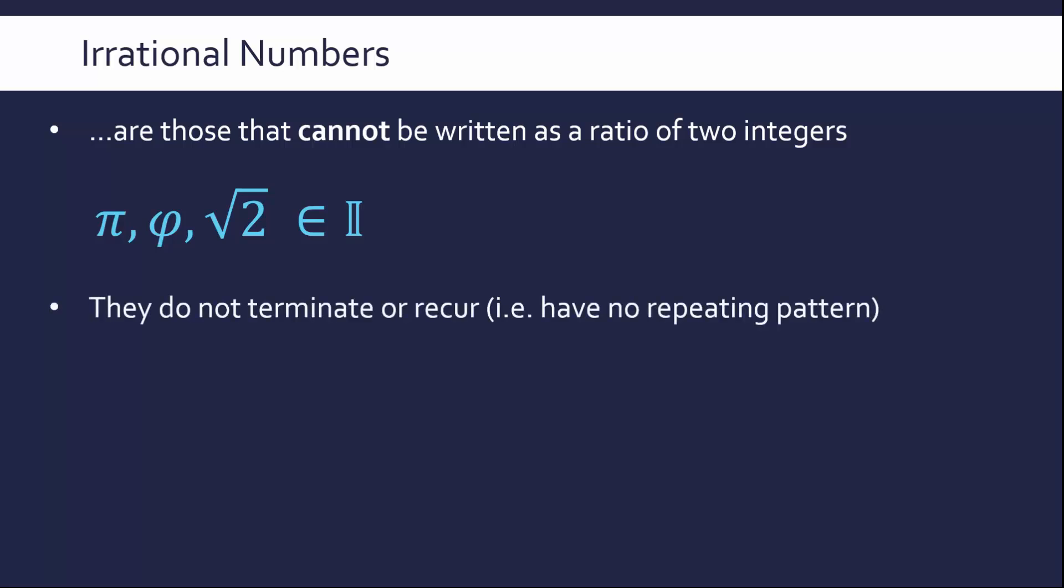These numbers don't terminate, which is why we cannot represent them as a ratio of two integers. Also, they don't recur, so they have no repeating pattern. Pi goes on forever. You can keep calculating more digits to it, but there isn't a pattern we can use to represent it as a ratio of two integers. For example, √2 is 1.41421 and so on. That goes on forever. It never terminates, but we haven't got a repeating pattern which would allow us to represent it as a ratio of two integers like a rational number would.